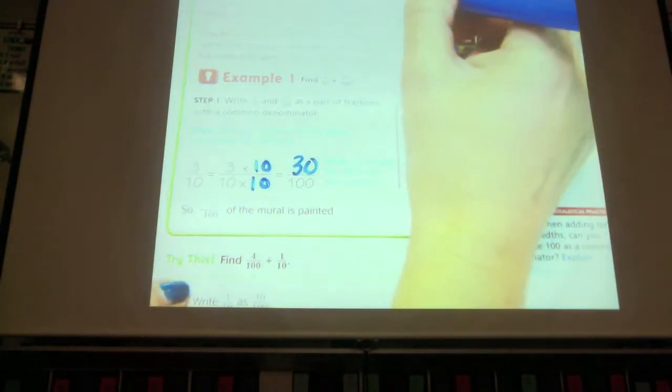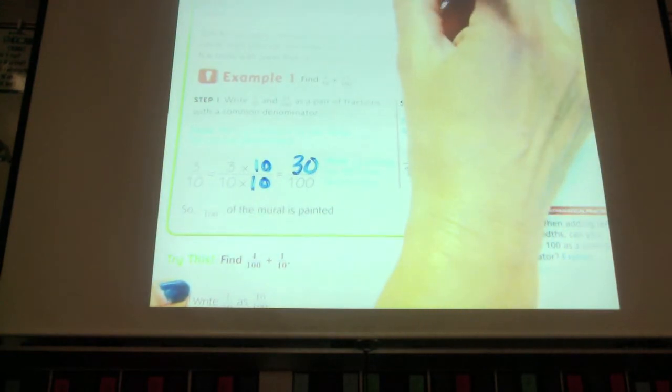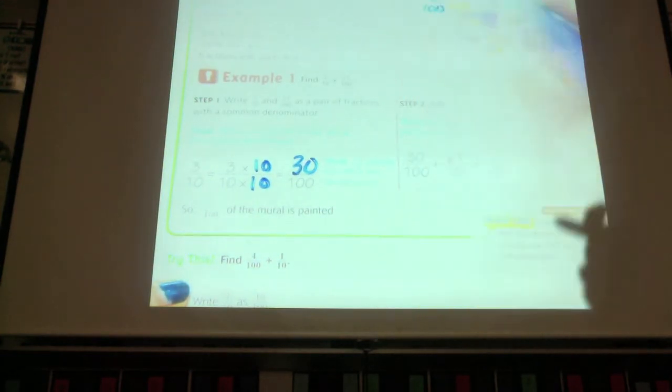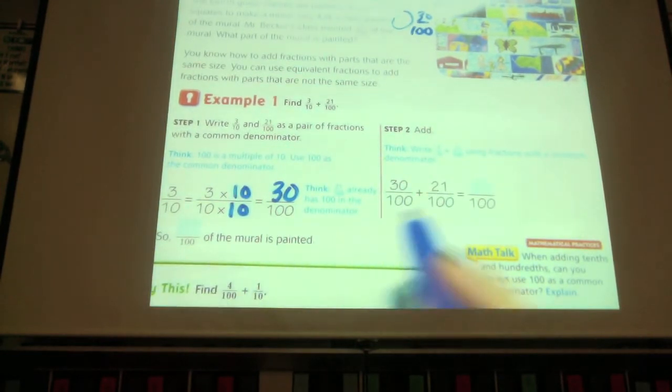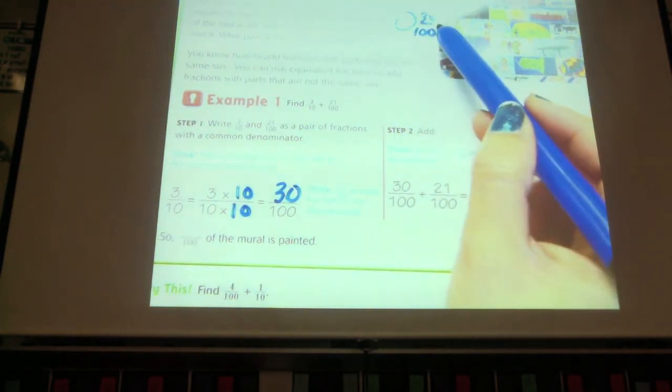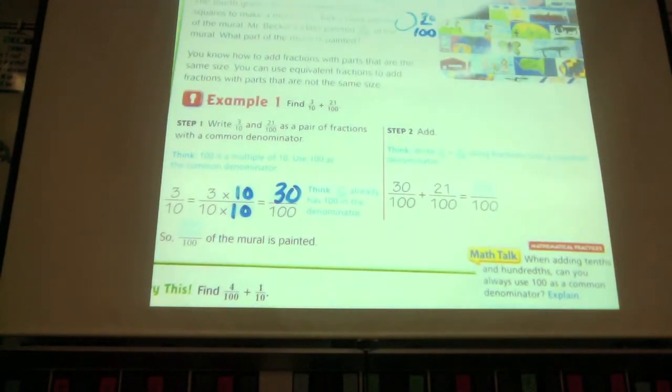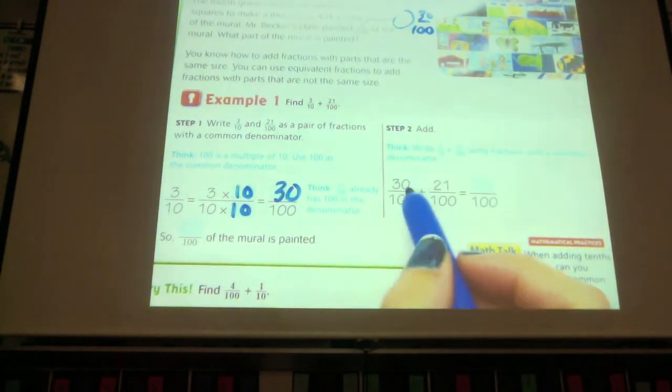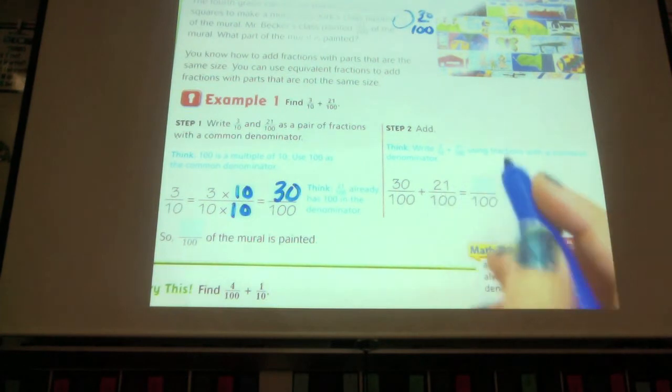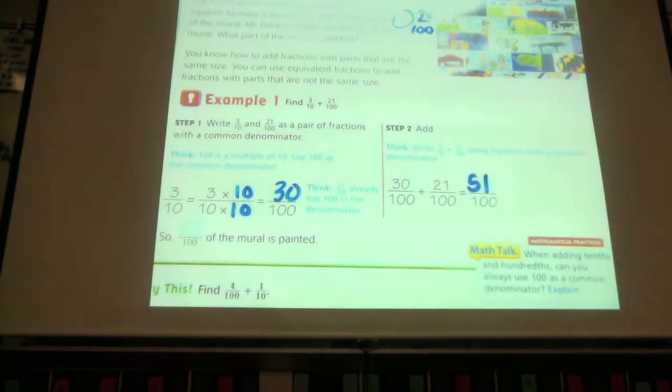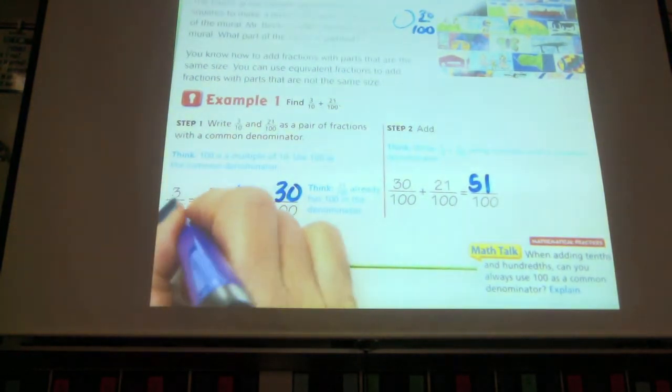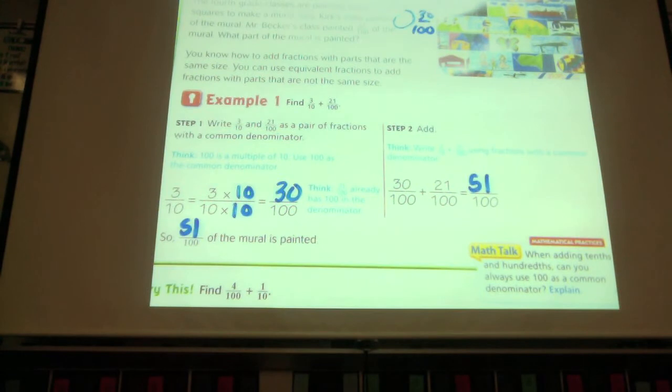Okay. So, now I have, this three tenths is now thirty one-hundredths. Can you see it? Can I now add thirty hundredths plus twenty one hundredths? Yes. Because the size of the parts are the same. So, I can do thirty one-hundredths plus twenty one-hundredths, which is fifty one-hundredths. Very good. So, fifty one-hundredths of the mural is painted.